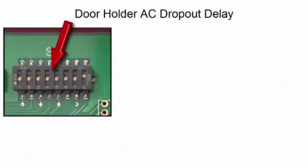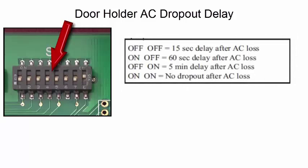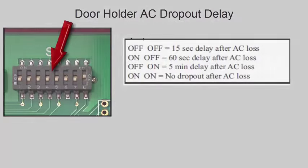DIP switch 4 and 5 are used to set the door holder AC dropout delay. When DIP switch 4 and 5 are both in the off position, there is a 15 second delay before the panel drops power to the door holder circuit. You can select the delay to be 15 seconds, 60 seconds, 5 minutes, or keep the door holder circuit energized on a loss of AC.